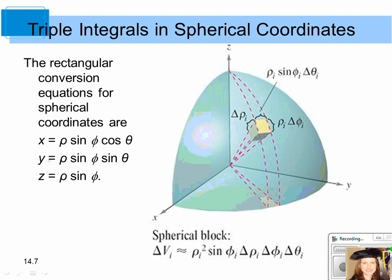These are the conversion equations used in converting from rectangular to spherical coordinates, where x equals rho sine phi cosine theta, y equals rho sine phi sine theta, and z equals rho cosine phi.